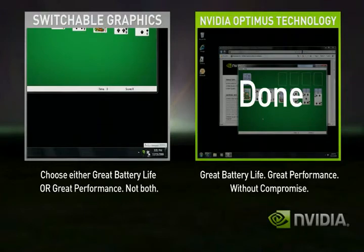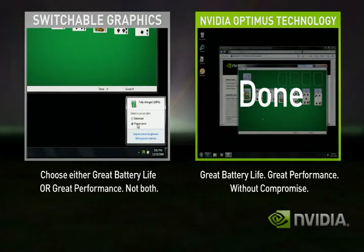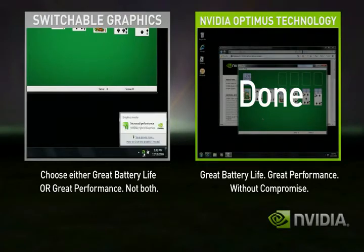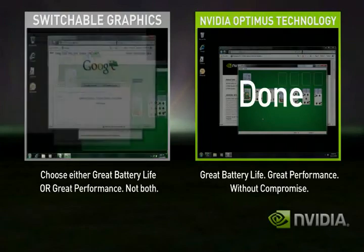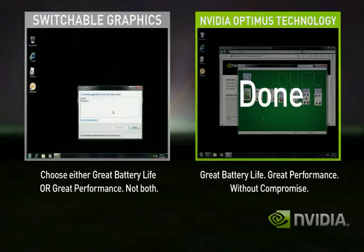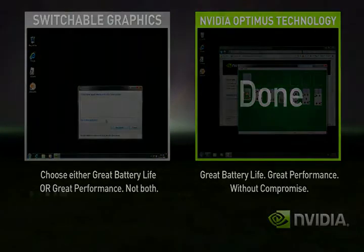To use the integrated graphics, you need to shut down all your applications again and switch. Few users ever switch with Switchable Graphics, so they either get good battery life or great performance. With Optimus, you automatically get both — seamless and automatic, without compromise.